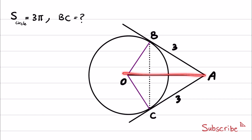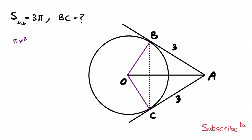This is because the radius is perpendicular to the tangents at the intersection point. Now that we know these are right triangles, we can use trigonometry. Since the area is 3π, we compute the radius: π times R squared equals 3π, so R equals square root of 3. Both radii to B and C are square root of 3.